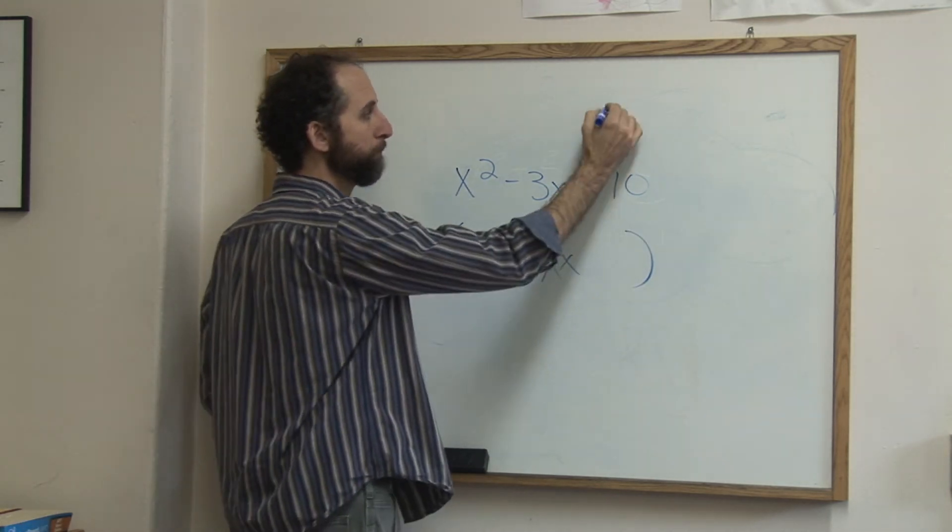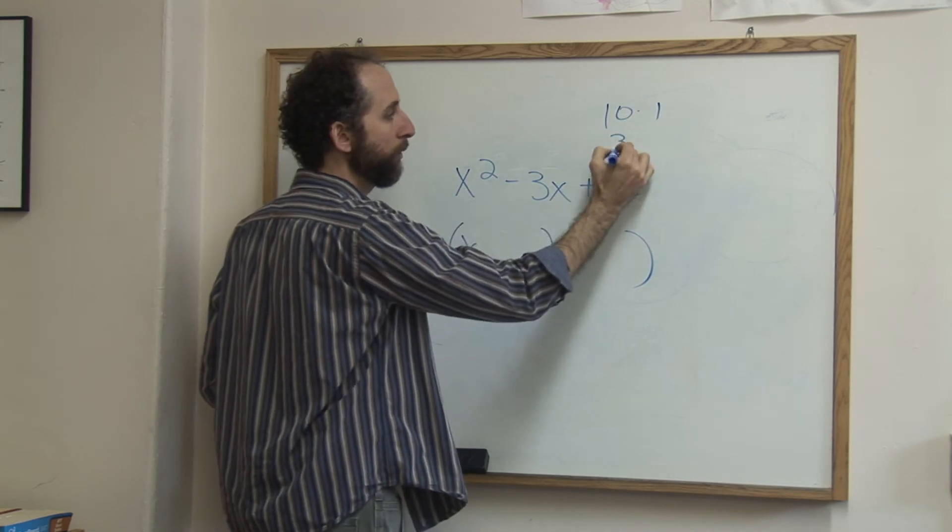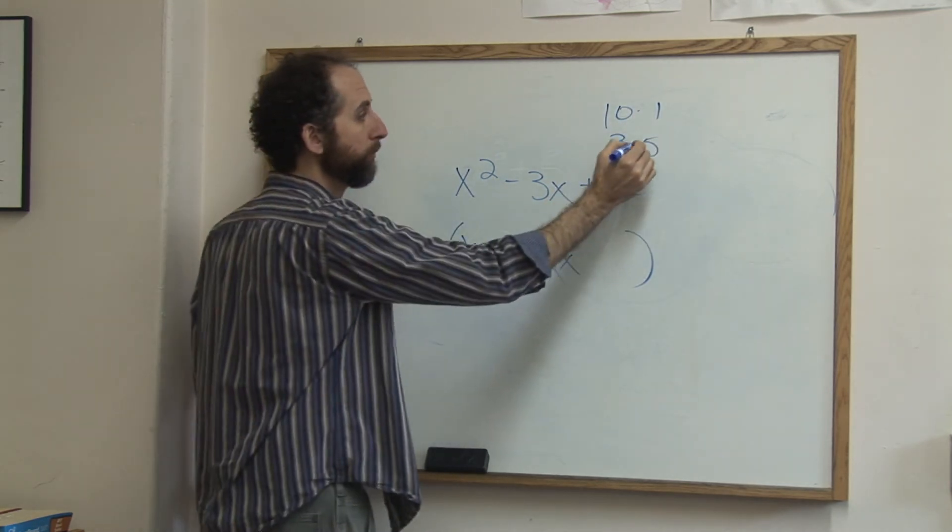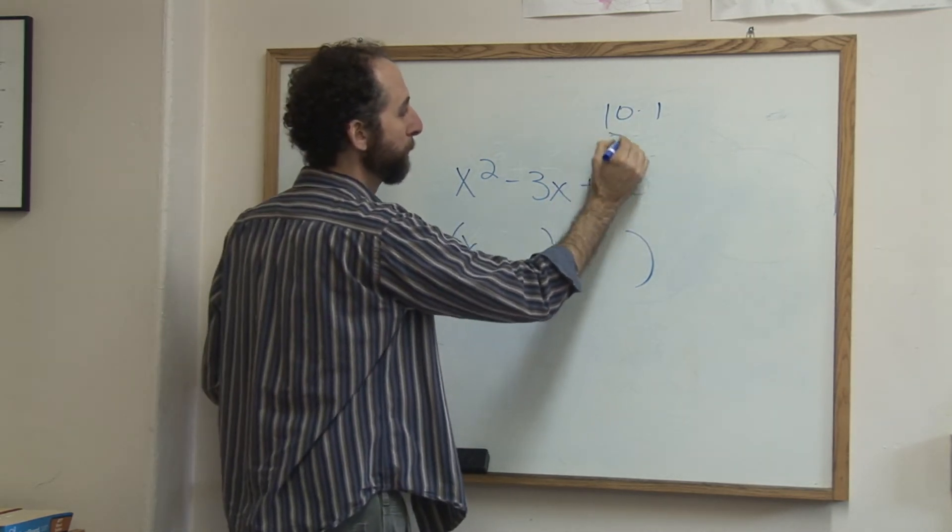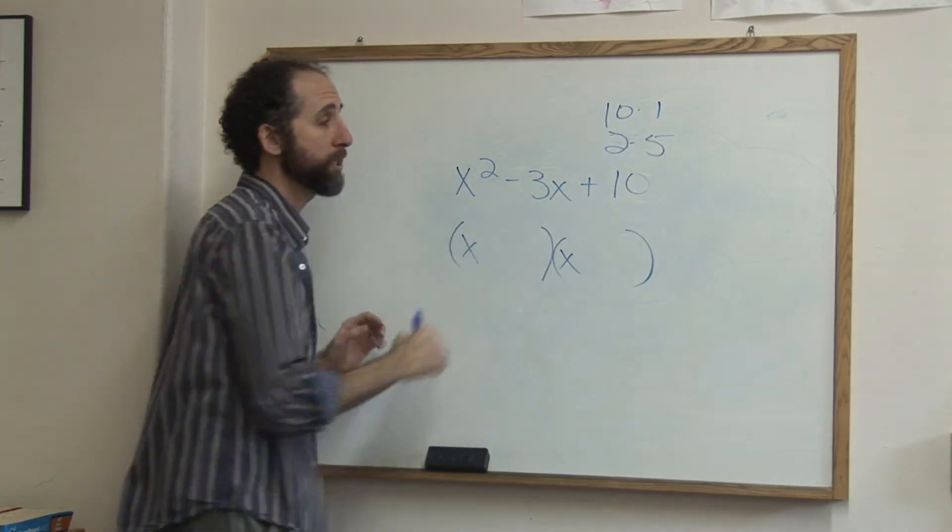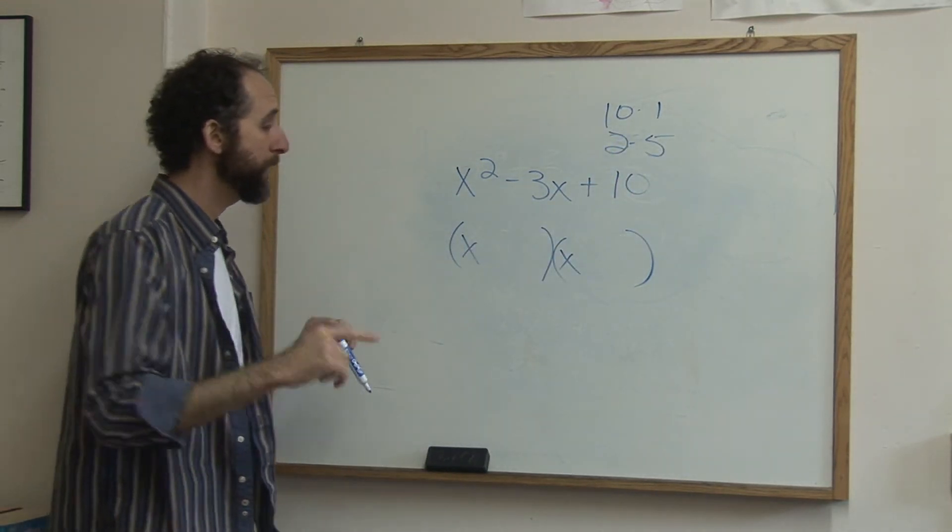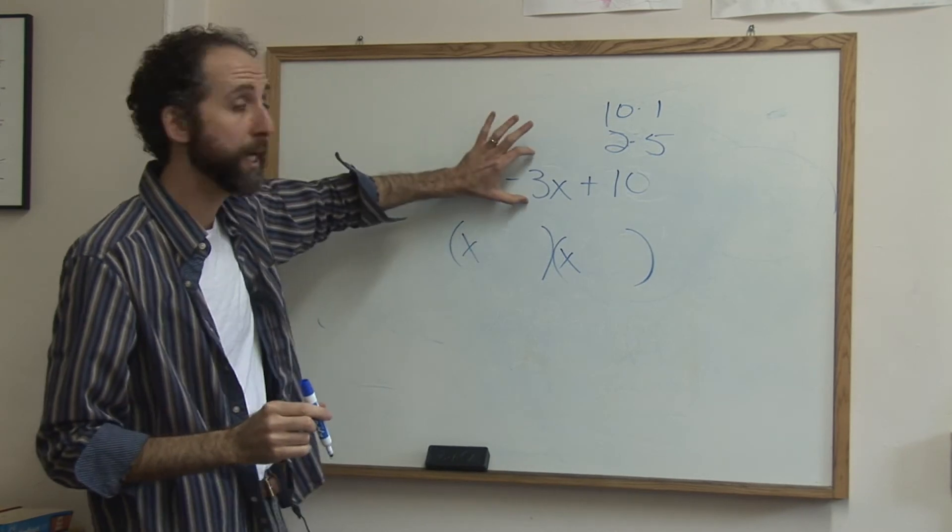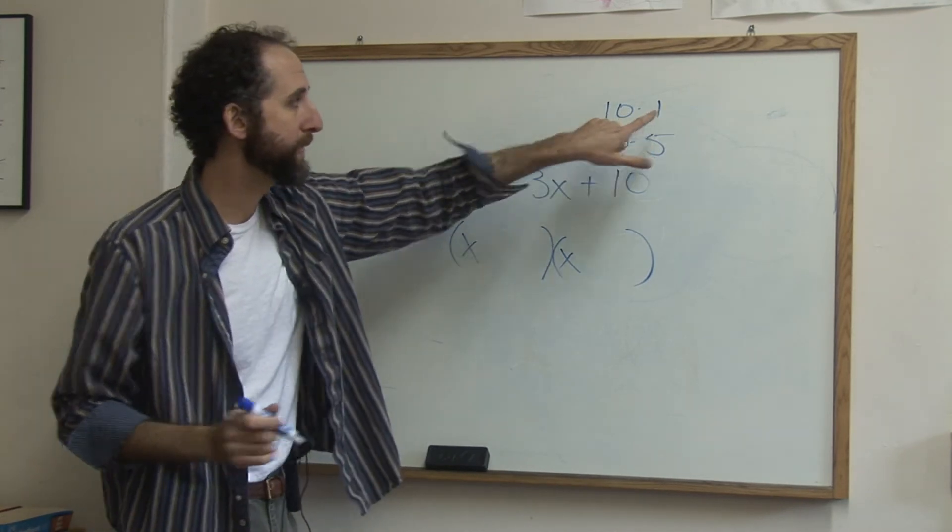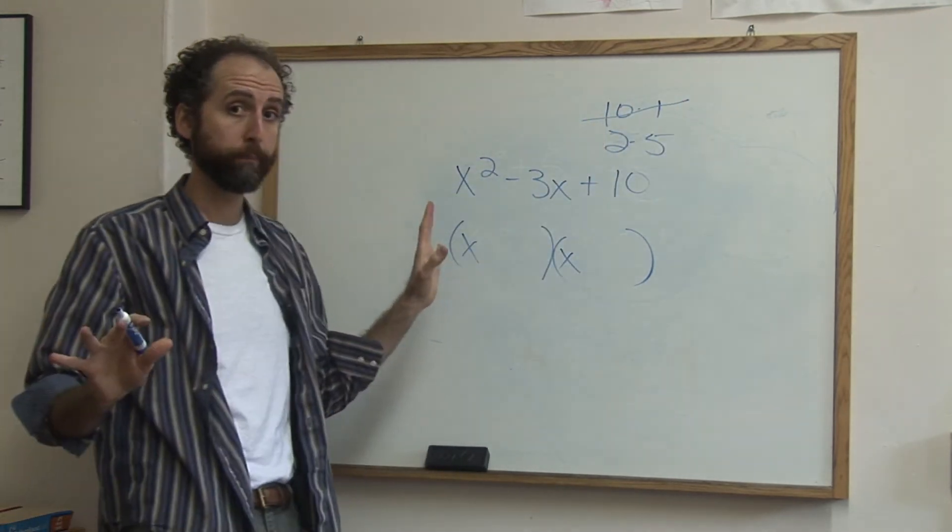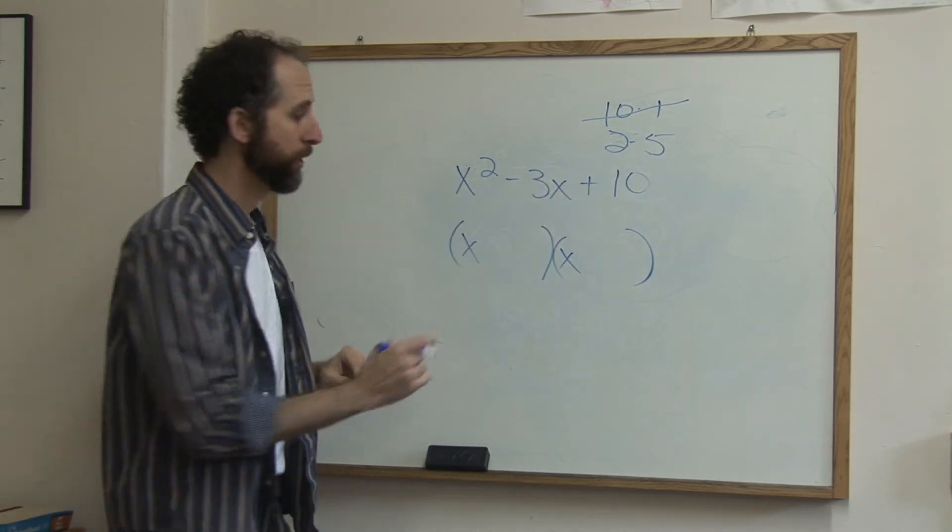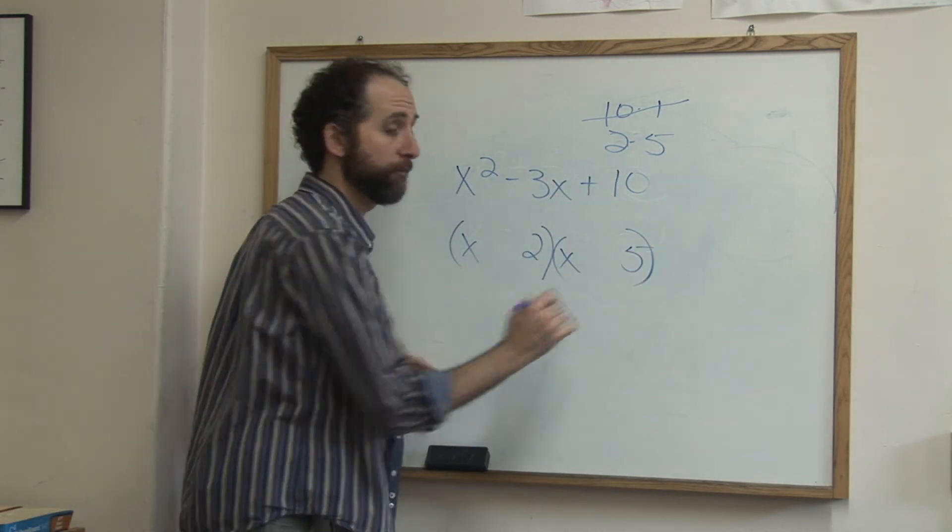It's either 10 and 1, or 2 and 5. So 10 times 1 is 10, 2 times 5 is 10. Now you've got to say, which of these two could combine to be 3? There's no way 10 and 1 combine to be 3, so that's out. It's got to be 2 and 5. So we put 2 and 5. Doing good.